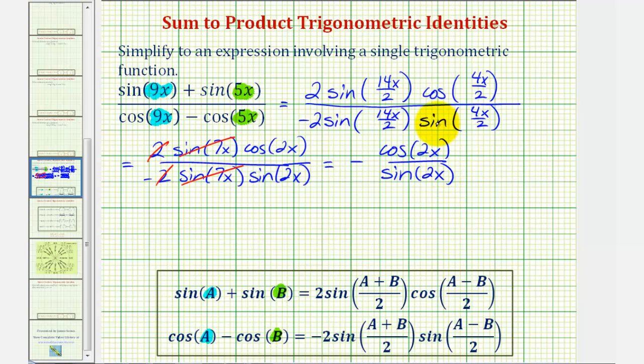But now we can simplify this further because remember, cosine theta divided by sine theta is equal to cotangent theta. Therefore this simplifies to a single trigonometric function as negative cotangent 2x.